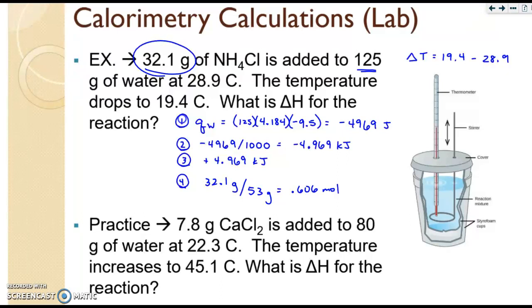And then finally, step five is to take the kilojoules from step three and divide that by the moles you just calculated. And when you do that, you should get right about 8.20 kilojoules per mole. So that's our answer. That would be the delta H. So it's a lot of steps, but it's not terrible. And this is only for lab. So at this time, please pause the video and try the provided practice problem.